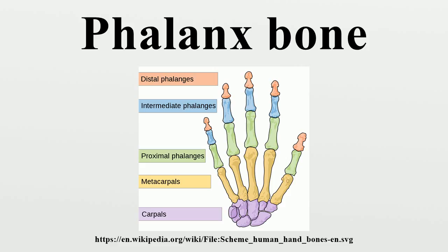Development: the number of phalanges in animals is often expressed as a phalangeal formula that indicates the numbers of phalanges in digits, beginning from the innermost medial or proximal. In the distal phalanges of the hand, the centers for the bodies appear at the distal extremities of the phalanges, instead of at the middle of the bodies as in the other phalanges. Moreover, of all the bones of the hand, the distal phalanges are the first to ossify. The distal phalanges of ungulates carry and shape nails and claws, and these in primates are referred to as the ungual phalanges.